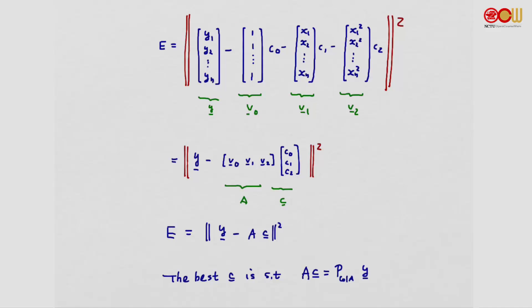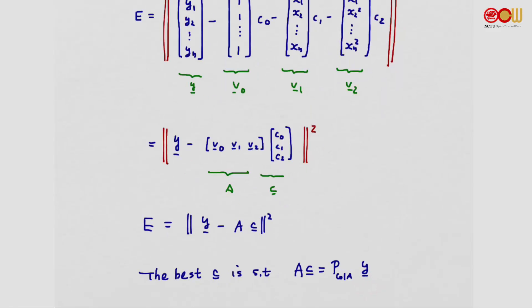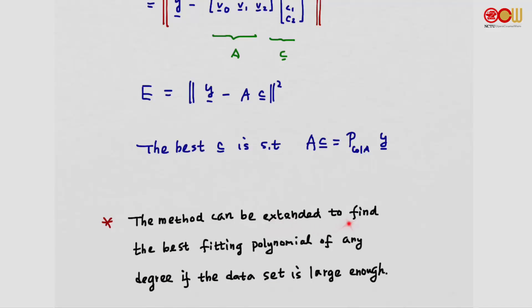We can write E in exactly the same form as before — ||y - Ac||² — with only A and c being different. The best c is such that Ac equals the orthogonal projection of y onto the column space of A. This method can be extended to find the best fitting polynomial of any degree, provided the data set is large enough. For a higher-degree polynomial, A simply has more columns and c has more entries.